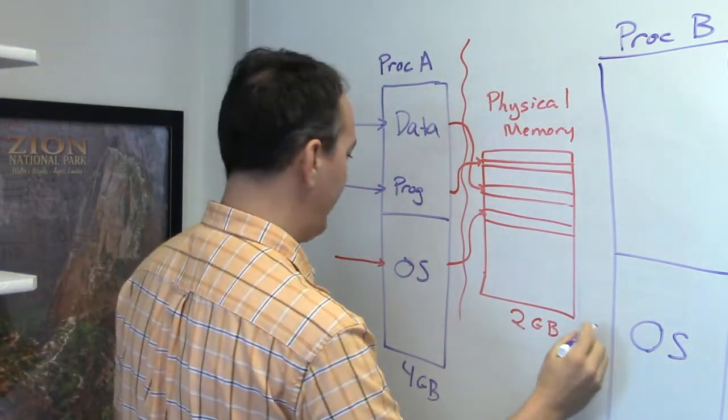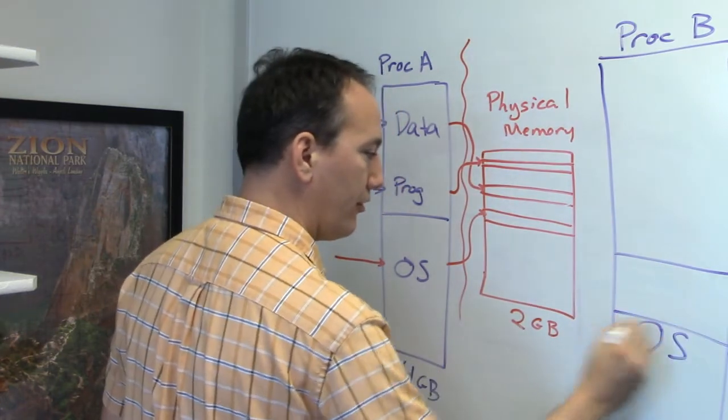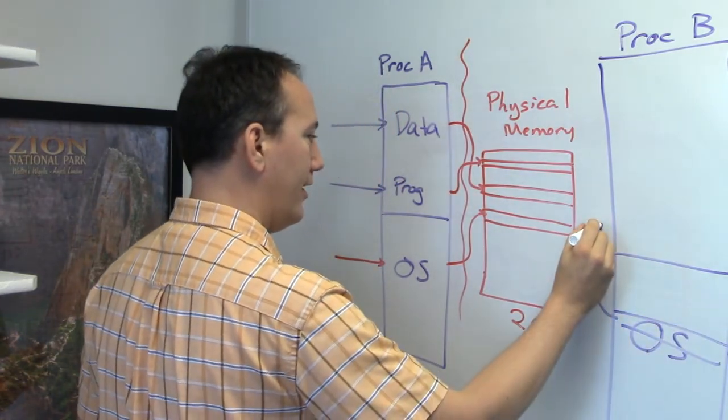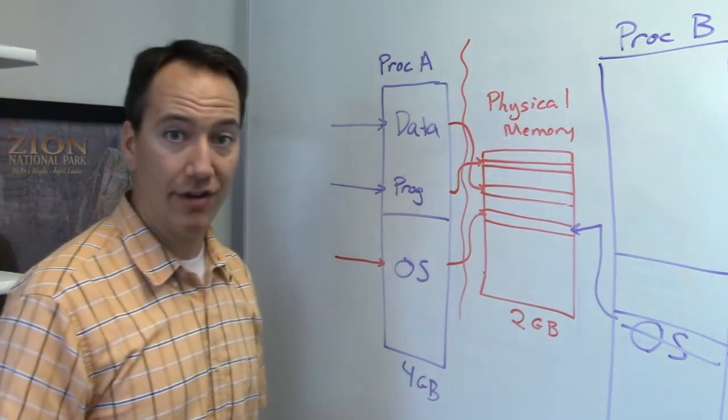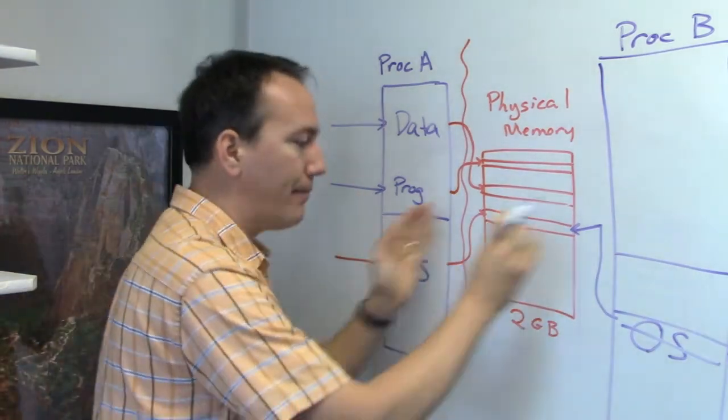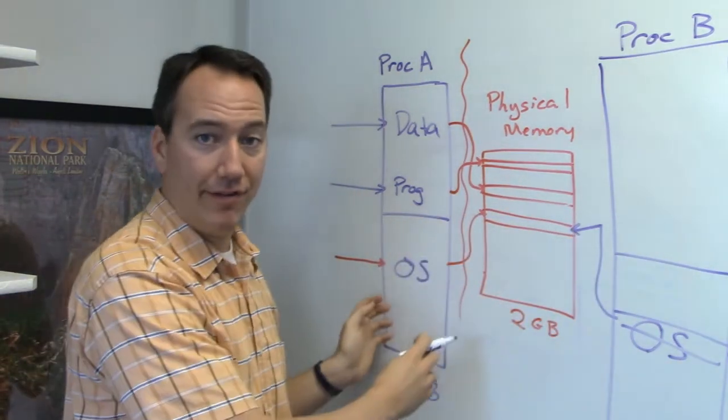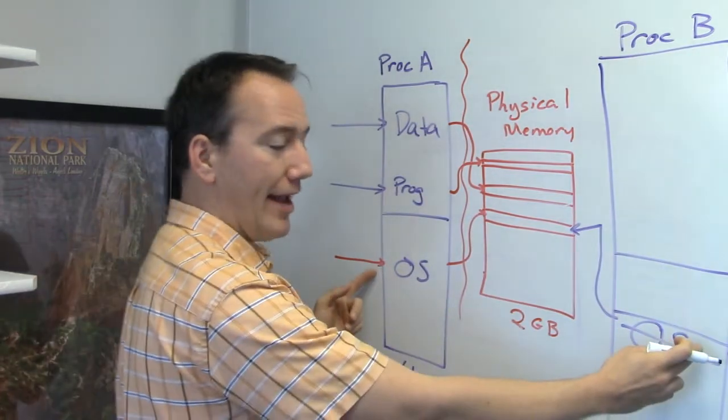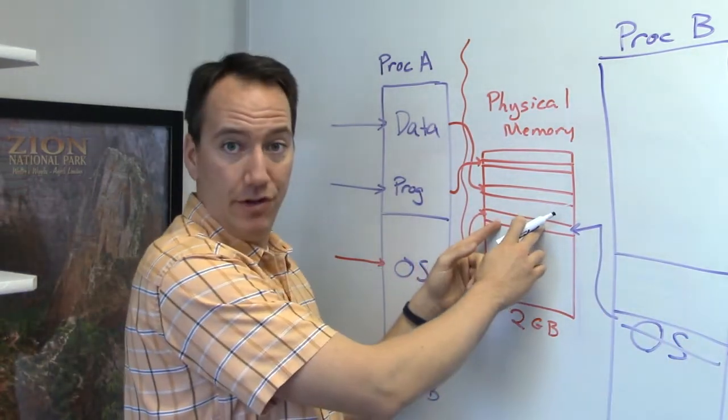So all of these memory addresses that I access virtually can correspond to the same physical location. That way I don't have to make a copy of the operating system into every single process. They can both map to the same physical location in memory.